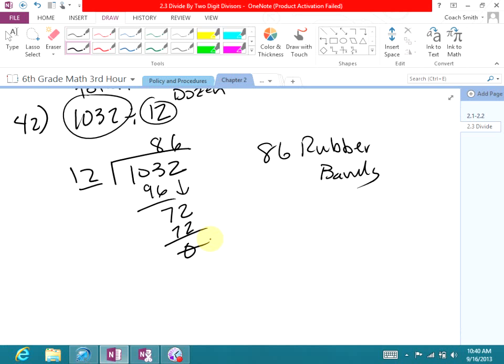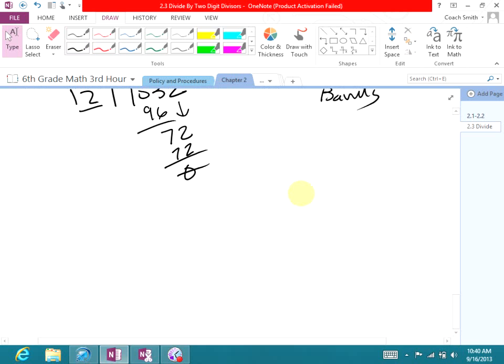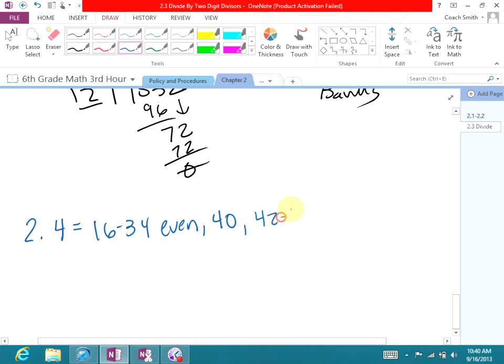Now here's what I want you to do for your work. Make sure you write it down. We've got 2.4. I keep writing 3 and it's 4. 2.4. You're going 16 through 34 even, number 40, and then 42 through 47.